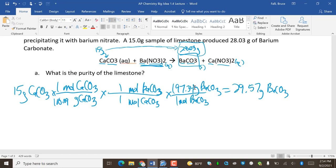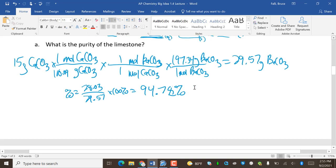I only got 28.03. So my purity is going to be percent is part 28.03 over total 29.57 times 100%. 28.03 divided by second answer is 94.78%. So what's the purity of limestone? 94.78%. Nice.